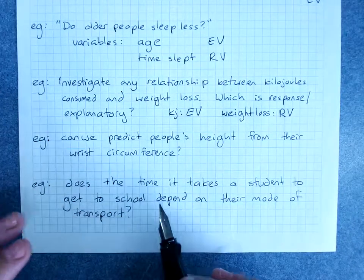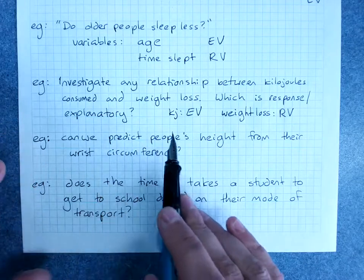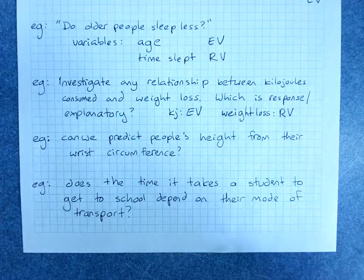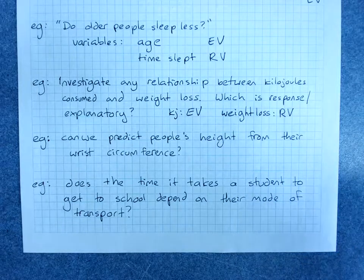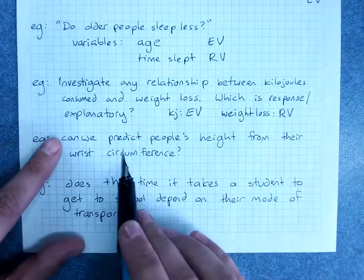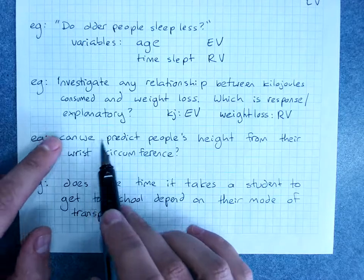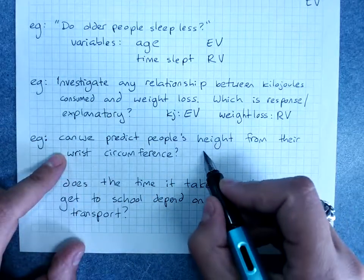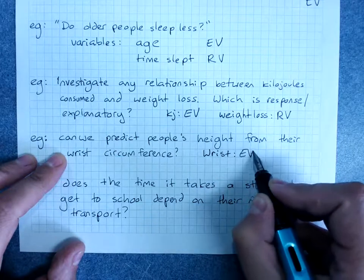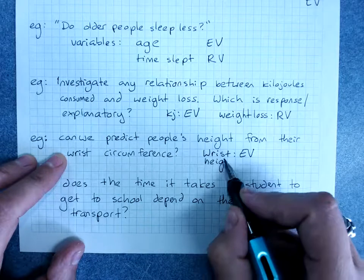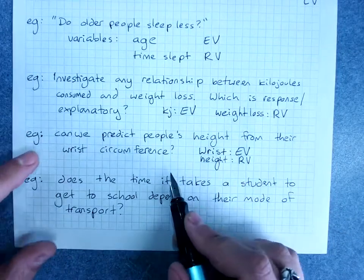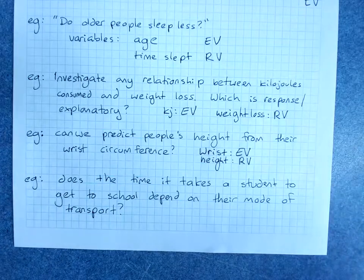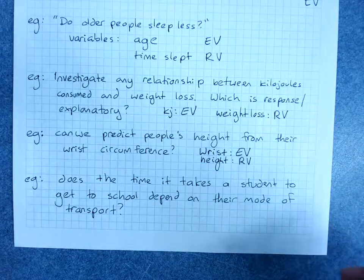Sometimes there's no obvious sentence that works. So: can we predict people's height from their wrist circumference? Height and wrist circumference — which one is explanatory? I could easily say taller people have a greater wrist circumference, or people with a greater wrist circumference are taller. So the question is what's happening here. The question says 'can we predict height from their wrist circumference?' — that means wrist circumference is the explanatory variable and height is the response variable. If I'd asked it the other way — can I predict people's wrist circumference from their height — then they'd be the other way around. It's about what is the explanation and what is the response.